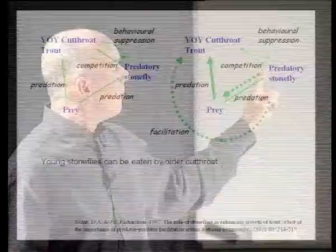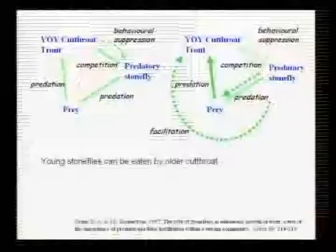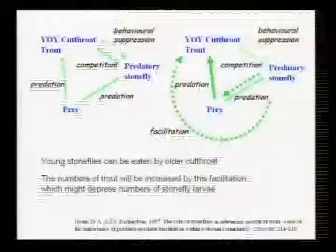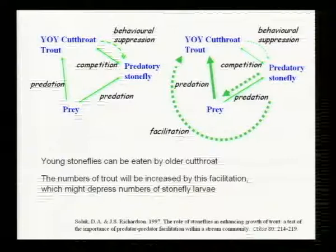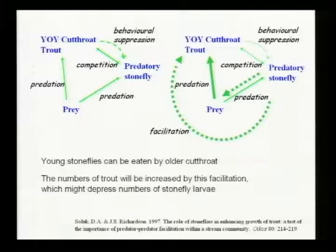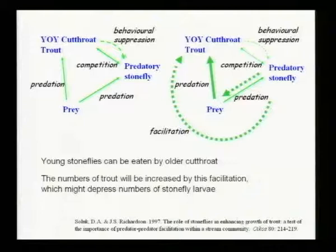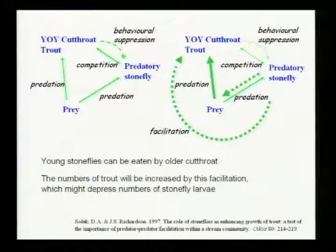This is even more complicated: as cutthroat trout get bigger, they can eat the stoneflies, so predation also becomes an issue. In the first experiment the trout were too small to eat the stoneflies, but bigger ones can. With the ultimate feedback that trout numbers could increase over time, there's yet another feedback. Even in this three-species example, the dynamics are such that it's very difficult to isolate the roles of single species — and this is one of the challenges we run into frequently in trying to demonstrate how biodiversity contributes to ecosystem function.